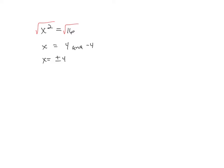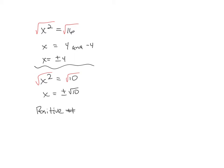Your first set of problems will say: determine the number of real solutions. If I can do the square root and it's a positive number, it has two real solutions — even if the answer is a decimal, you can type it into a calculator. There is such a thing as imaginary solutions, but that's algebra two.